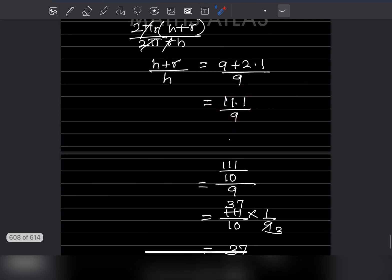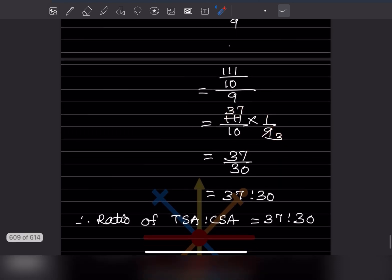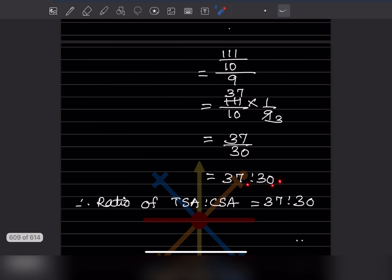To simplify 11.1 by 9 without a calculator: multiply numerator and denominator by 10 to get 111 by 90. Simplifying, 3 goes into both — 111 is 37 × 3 and 90 is 30 × 3 — giving 37 by 30. So the ratio of TSA to CSA is 37 : 30.